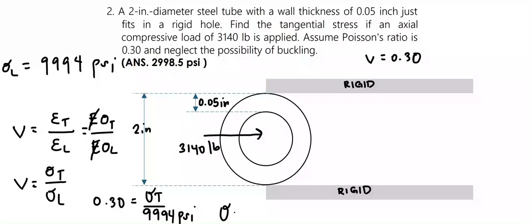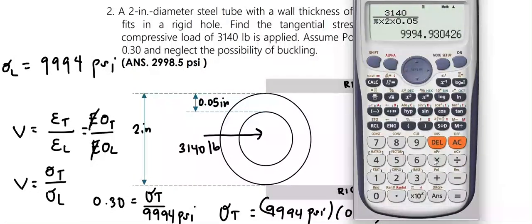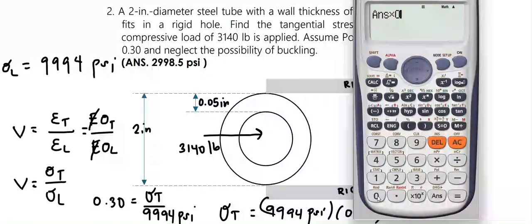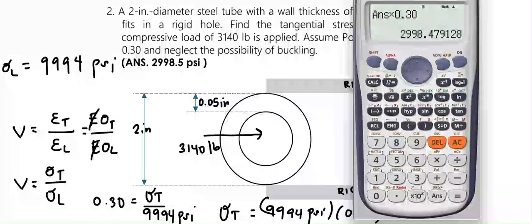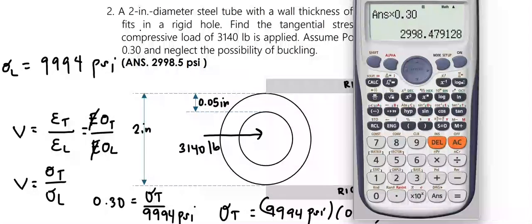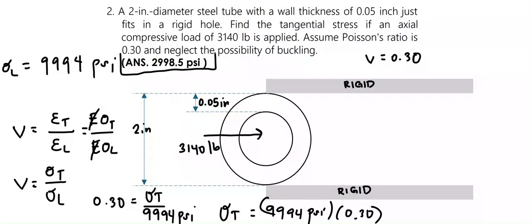The tangential stress equals 9,994 psi times 0.30. Multiplying, we get 2,998.5 psi, which is the answer to this problem.